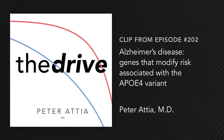Anybody listening to this who has been regularly listening to the podcast is undoubtedly familiar with APOE and its three subtypes — type 2, 3, and 4 — and of course you get two of each. You get two genes, so you can have six possible combinations.